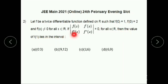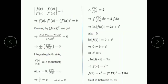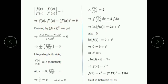Here, given that the determinant of [f(x), f'(x); f'(x), f''(x)] = 0. So, f(x)·f''(x) - [f'(x)]² = 0. Dividing by [f(x)]², we get a simplified expression.